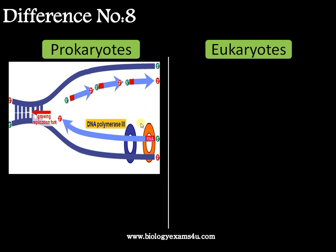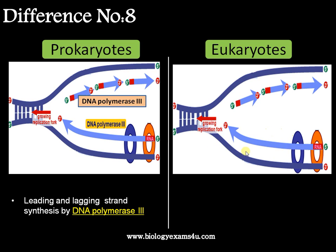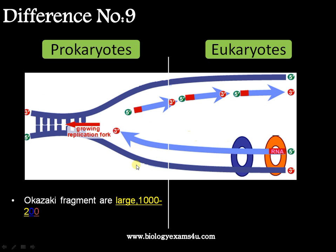Difference number eight is regarding DNA polymerase. In DNA replication there are two strand syntheses: the leading strand, which is synthesized continuously, and the lagging strand, which is synthesized as short fragments called Okazaki fragments. In prokaryotes, both the leading and lagging strands are synthesized by DNA polymerase III. In eukaryotes, the leading strand is synthesized by DNA polymerase delta and the lagging strand is synthesized by DNA polymerase alpha.